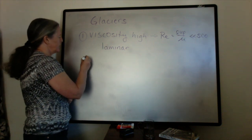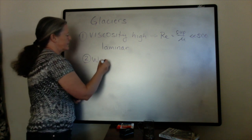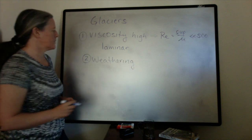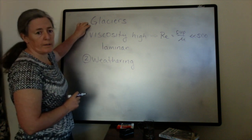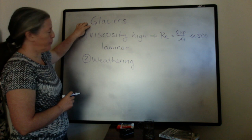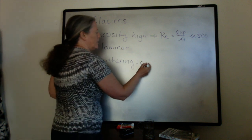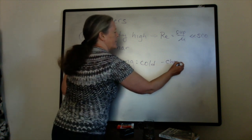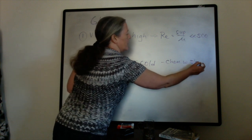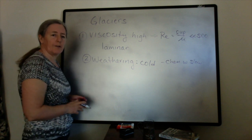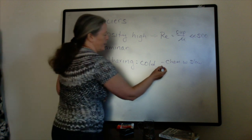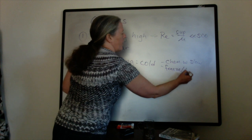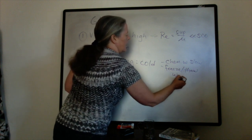The second thing to talk about is the weathering characteristics. There are several key aspects. One of the main things that defines where glaciers and ice transport are prevalent is the cold temperatures. The cold has two effects: one is that chemical weathering is very slow, so you tend not to have very much chemical weathering in glacial environments. The second is that freeze-thaw processes are common.